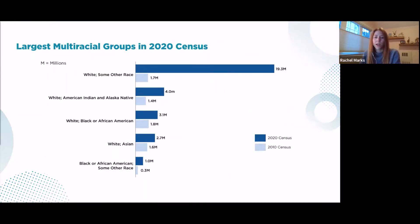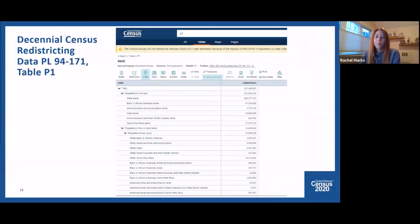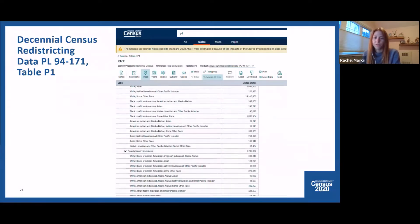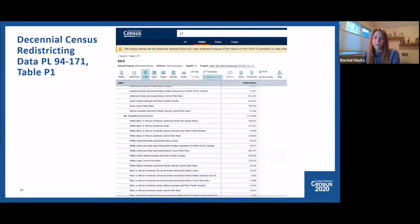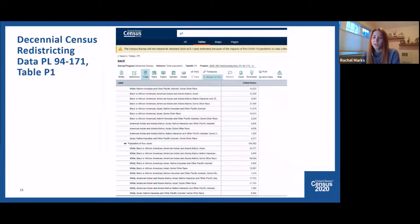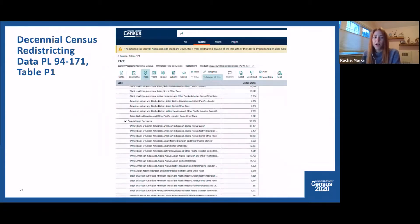In the 2020 census, the largest multiracial combinations were white and some other race at 19.3 million, white and American Indian Alaska Native at 4 million, white and Black or African American at 3.1 million, white and Asian at 2.7 million, and Black or African American and some other race at 1 million. In table P1 of the redistricting data, population counts are available for every possible multiracial combination. These data are available for geographies down to the census block level — your state, county, city, town, and neighborhood on data.census.gov.